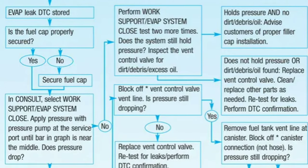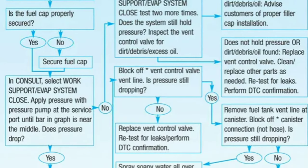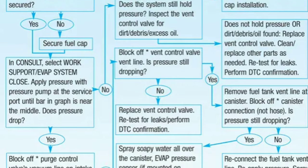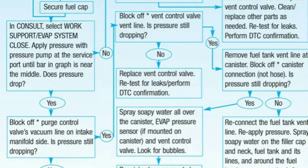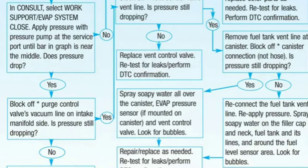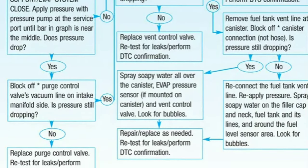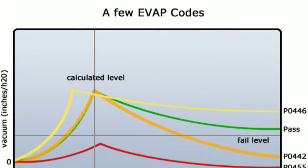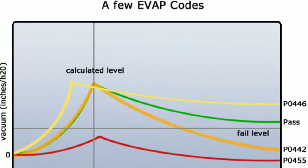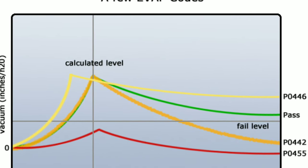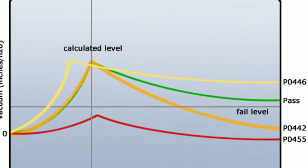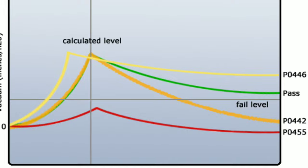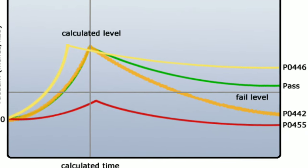Whenever any of these DTCs are triggered, the EVAP system needs to be checked out and fixed as soon as possible. If you ignore the problem, it could lead to more pollution, less fuel efficiency, and damage to other parts of the vehicle.